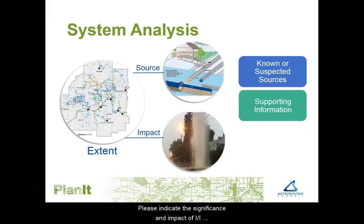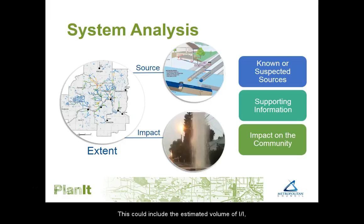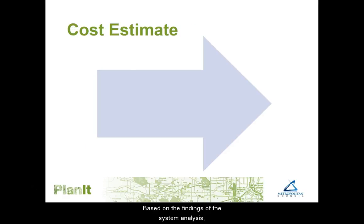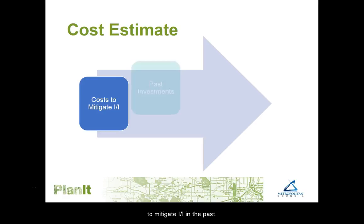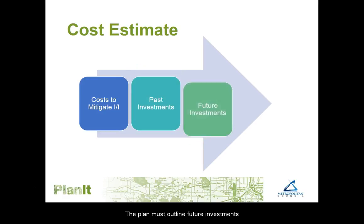Please indicate the significance and impact of I&I on the community. This could include the estimated volume of I&I, past or future effects on public health, or the limitations on future growth. Based on the findings of the system analysis, please provide a cost estimate to mitigate I&I sources. Many communities have completed projects and programs to mitigate I&I in the past, and the plan must outline future investments that the community intends to complete.